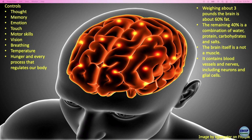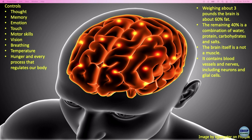The brain weighs about 3 pounds — approximately 1.2 to 1.3 kg — and it is about 60% fat. So the brain is predominantly made from fat. Fat is extremely important, specifically for young children when myelination is occurring. The remaining 40% is a combination of water, protein, carbohydrate, and salts.